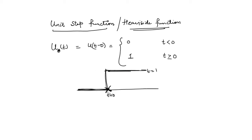This discontinuity is a finite jump discontinuity. Before t=0 the value of the function is finite, and after t=0 the limit of the function is also finite, but they are not equal. Therefore this function is discontinuous at t=0.